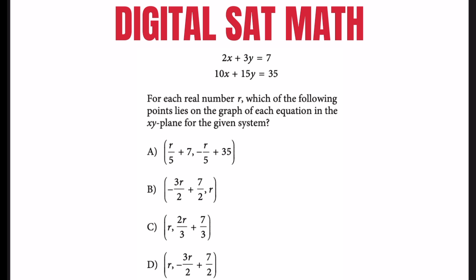2x plus 3y equals 7, 10x plus 15y equals 35. For each real number r, which of the following points lies on the graph of each equation in the xy-plane for the given system?